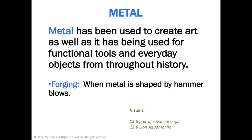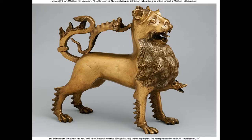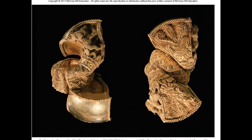We're going to look at metal forging and casting. We already talked about casting, but this is on a smaller scale. Forging is metal hammered by blows. This example is tiny — like an inch and a half high — just small little objects.